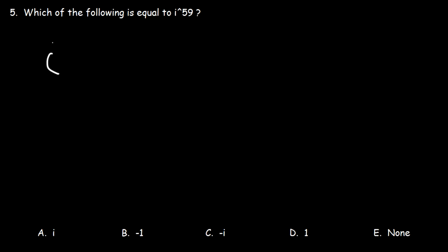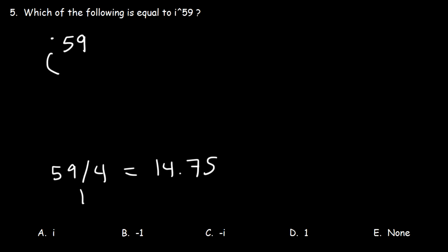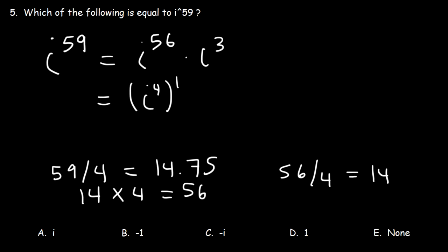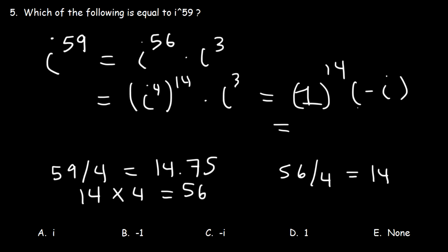Number five: which of the following is equal to i raised to the 59th power? 59 divided by 4 equals 14.75. 14 times 4 is 56, so we break this into i to the 56th times i to the 3rd. 56 plus 3 is 59, and 56 divided by 4 is 14. We rewrite i to the 56th as i to the 4th raised to the 14th, since 4 times 14 is 56. i to the 4th is always equal to 1, and i to the 3rd is equal to negative i. 1 to the 14th is 1, so times negative i, the final answer is negative i. So C is the right answer.